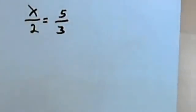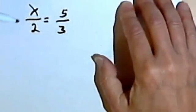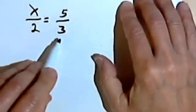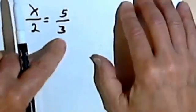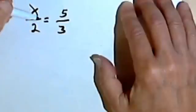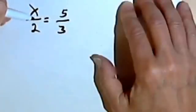Okay, here's one more. So I've got x over 2 equals 5 thirds. Now I could find a common denominator, which would be 6, and multiply both of these fractions by 6. But when you've got only two fractions, you've got an equation, and both sides are fractions, then you can cross-multiply.